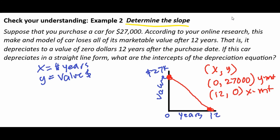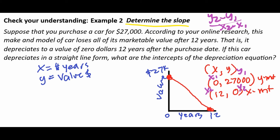For example number two, we're going to continue the problem from example number one, but this time we're going to determine the slope. In order to determine the slope, remember the formula is y2 minus y1 over x2 minus x1. We already have two coordinate points, so we're going to label x1, x2, y1, and y2 and use those terms to calculate the slope for this particular equation.